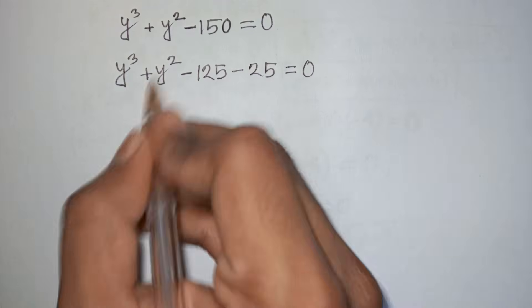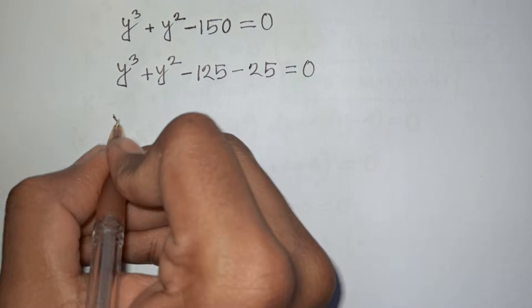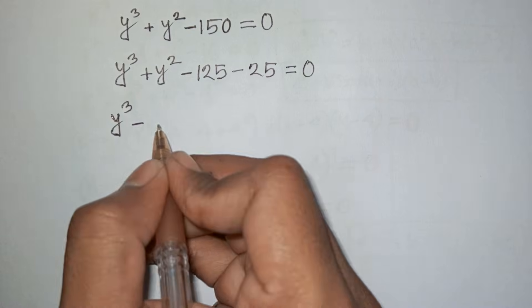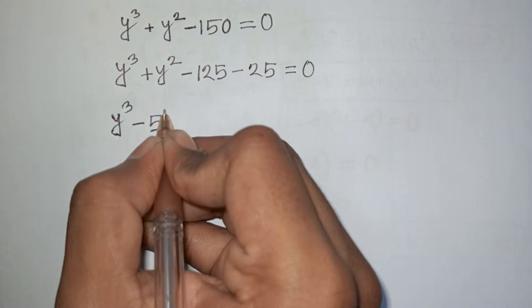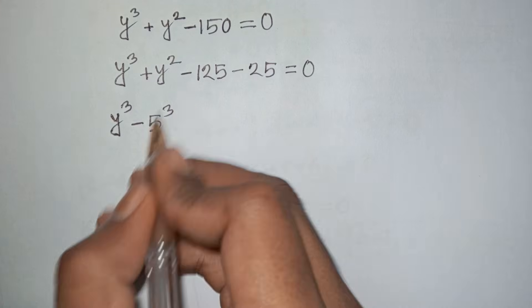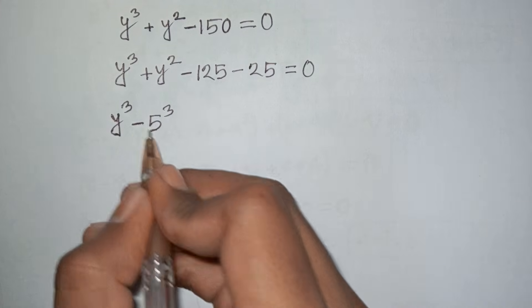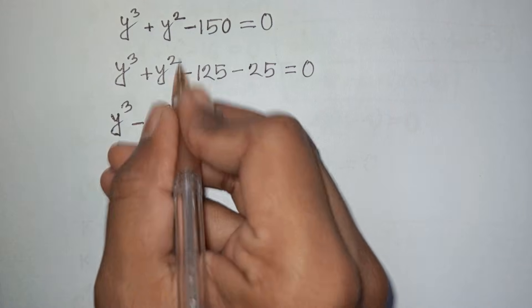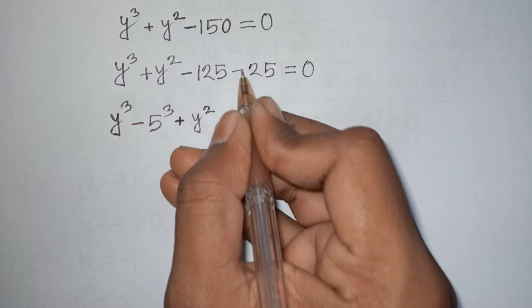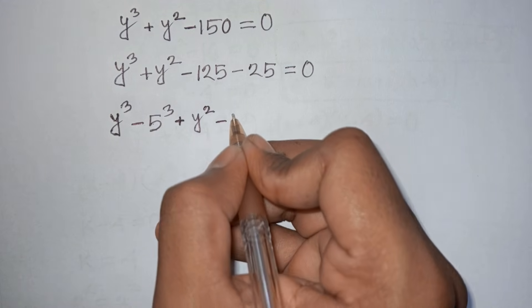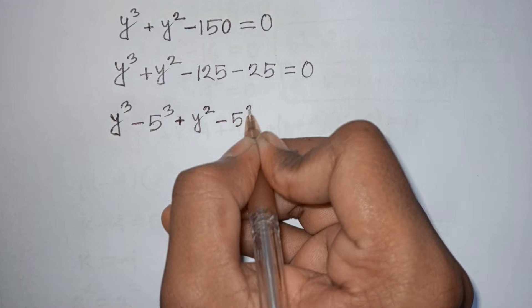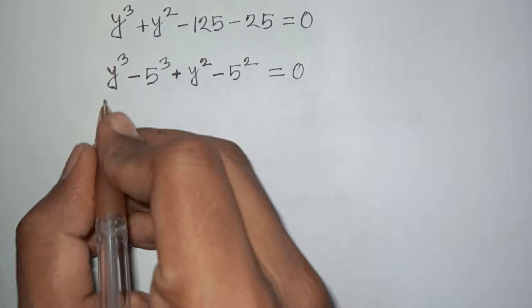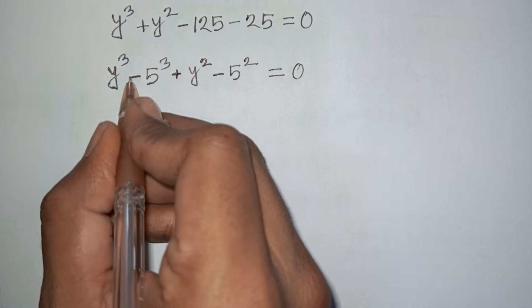-125 is the same as -5³, so we rewrite as y³ - 5³ + y² - 25 = 0. Now we apply the formula for a³ - b³.